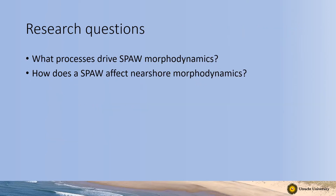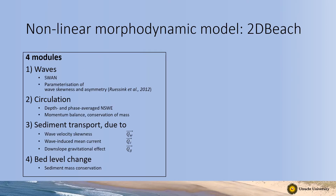For this research into spore morphodynamics we're particularly interested in the processes that drive spore morphodynamics during their onshore migration and how a spore affects the nearshore morphodynamics as it attaches to an inner bar or the beach. To study these research questions we used a numerical model — specifically the non-linear morphodynamic model 2DBeach, developed at the University of Bordeaux. It consists of four modules: waves, circulation or currents, sediment transport, and bed level change.